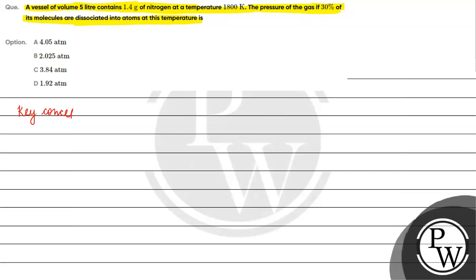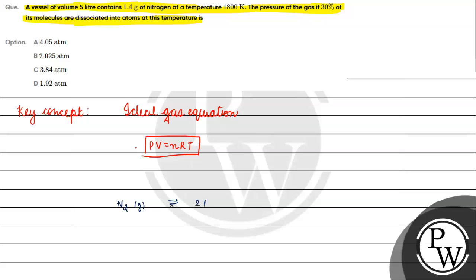The key concept for this question is the ideal gas equation, which is PV = nRT, where P is pressure, V is volume, n is number of moles, R is the universal gas constant, and T is temperature. We have nitrogen gas that is dissociated into atoms.